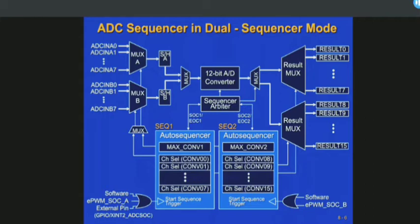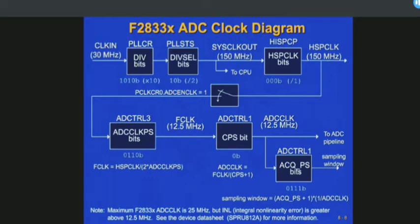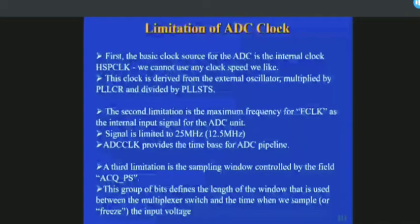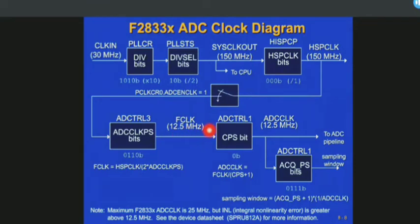There is a limitation for ADC clock. The clock for the ADC is generated from the high speed clock prescaler. The high speed clock is 150 MHz and is generated from PLL control registers, PLL status, and external oscillators. The maximum frequency for F_clock as an internal input signal for ADC units is 25 MHz. This F_clock is the internal signal for the ADC.